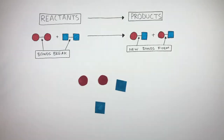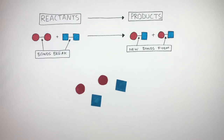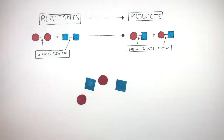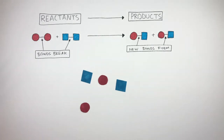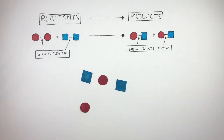Here we have the reacting particles. For any collision to be successful, the particles must collide. These two particles are moving towards each other, but because they move past each other and do not collide, there is no successful collision. The particles must collide for a successful collision to take place.